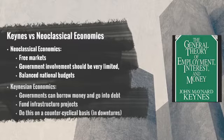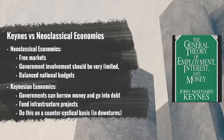One of the main arguments of the book is that governments should be involved in the economy, could borrow money and go into debt in order to fund infrastructure projects, and that this can be done on a counter-cyclical basis. That is, the best time for the government to spend money is during an economic downturn. One of the key benefits of this approach was full employment.